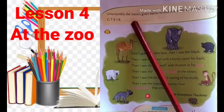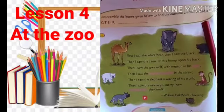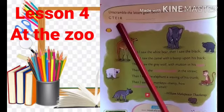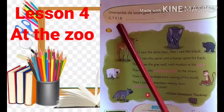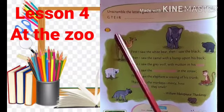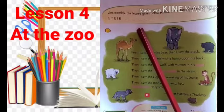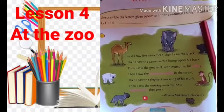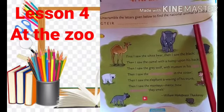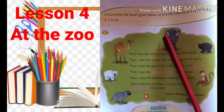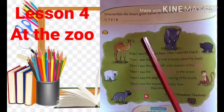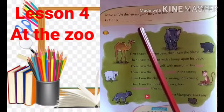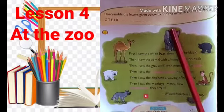Unscramble the letters given below to find the national animal of India. Here they have given letters not in order. By arranging the letters in order we will get a word that is the national animal of India. Which is the national animal of India? Tiger. What is the spelling of tiger? T-I-G-E-R, Tiger. You have to write the spelling of tiger in the blanks: T-I-G-E-R, Tiger.